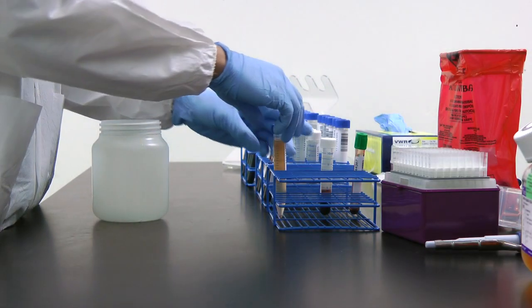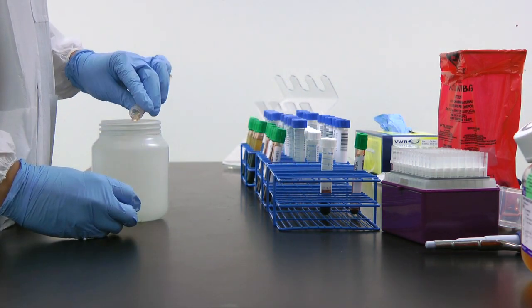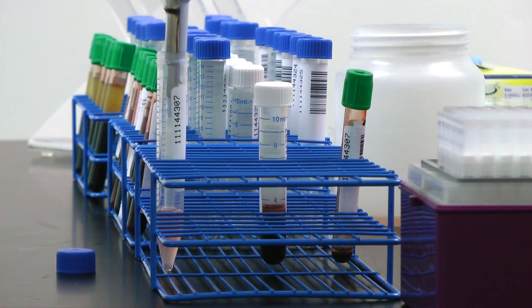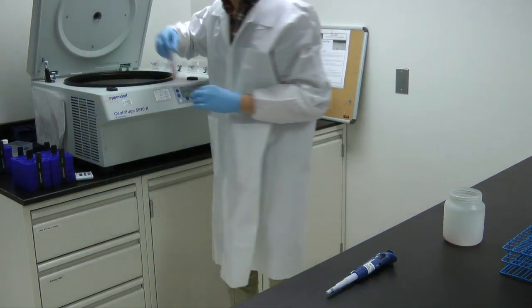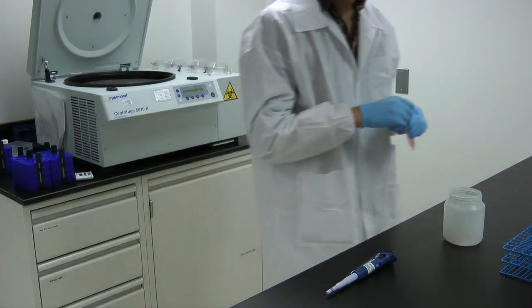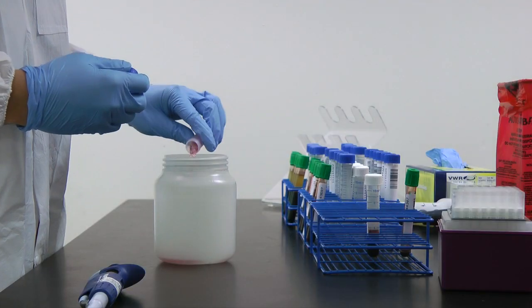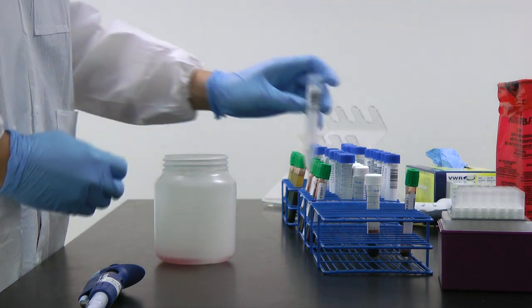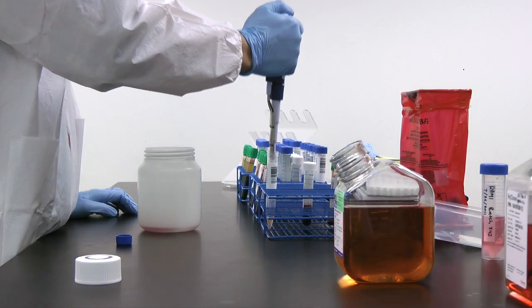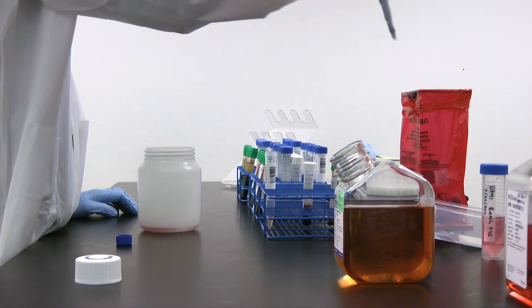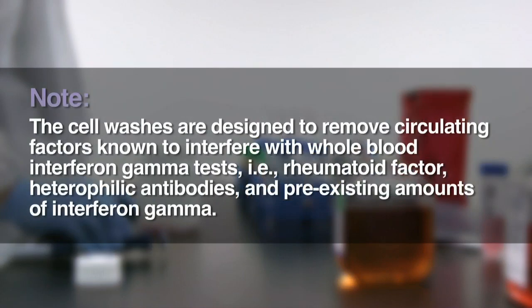The cell pellet is resuspended in cell culture medium and the suspension is centrifuged one final time. The technologist discards the supernatant and resuspends the pellet in 0.7 milliliters of AIM-5 cell culture medium in preparation for cell counting. The cell washes are designed to remove circulating factors in whole blood known to interfere with interferon gamma tests including rheumatoid factor, heterophilic antibodies, and pre-existing amounts of interferon gamma.